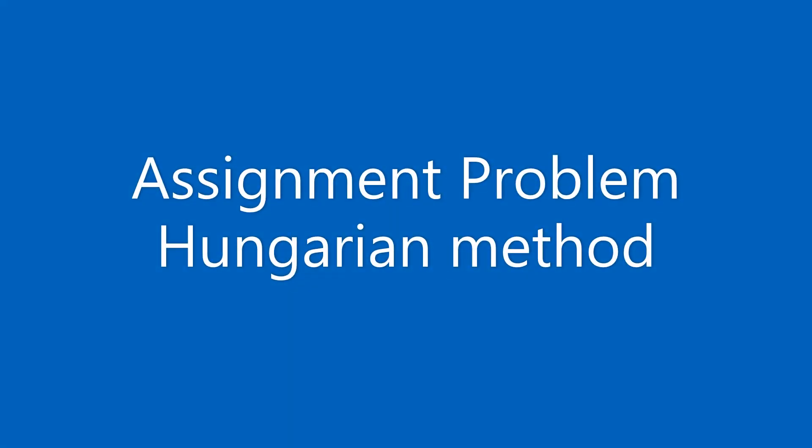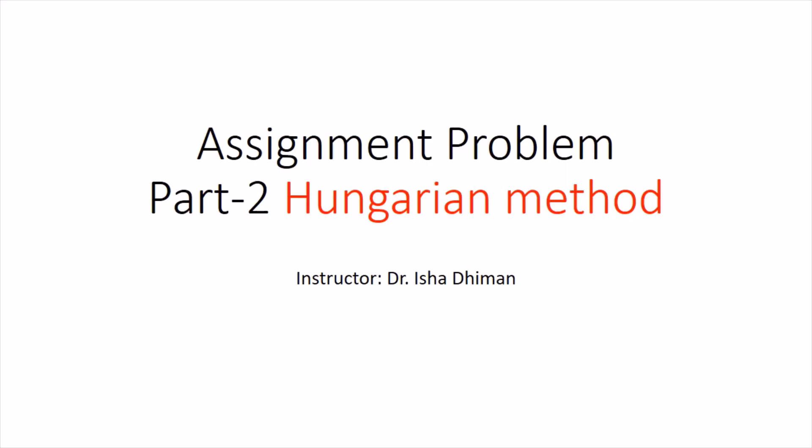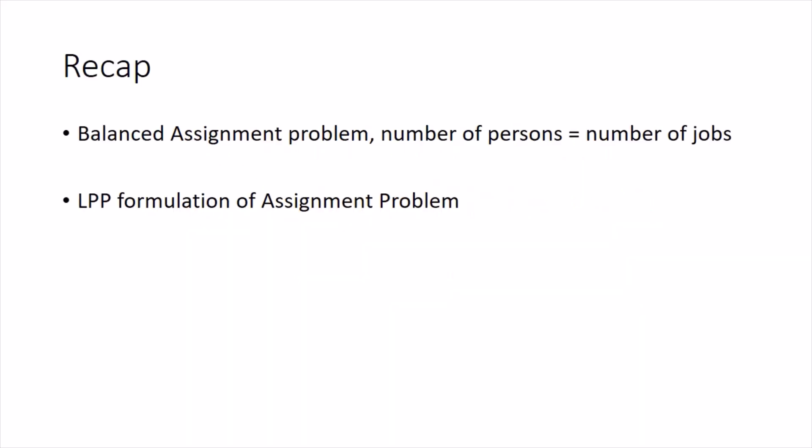Hello everyone. In this video lecture, let's try to understand the Hungarian method, which is used to solve the assignment problem. Before we start, let's have a recap of what we have done so far. We have defined a balanced assignment problem, which means the number of persons should be equal to the number of jobs, and we have also seen the LPP formulation of an assignment problem.